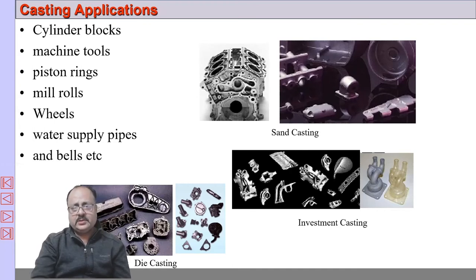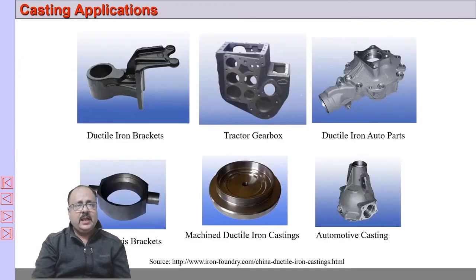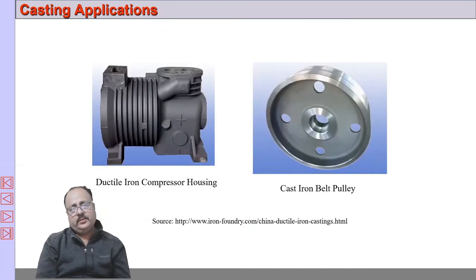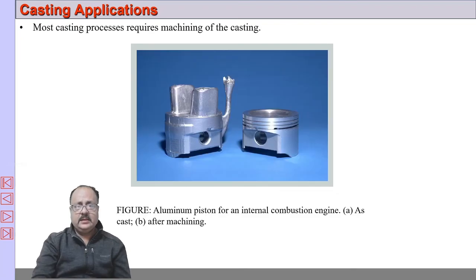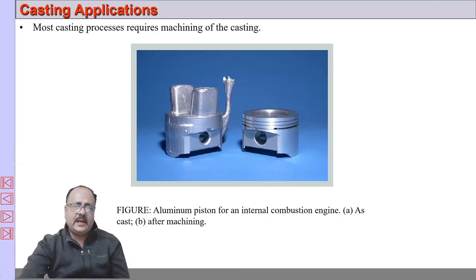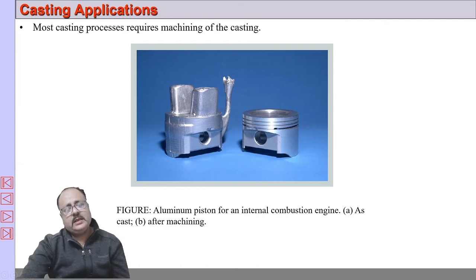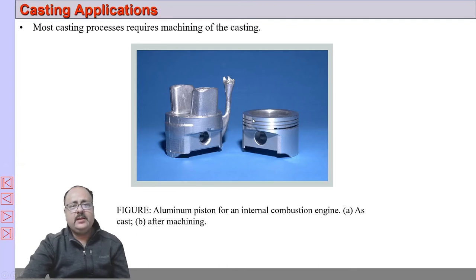These are some images of casting processes — sand casting, investment casting, die casting, and sand casting products. You can see a ductile iron compressor housing, a pulley on the right side, and a piston. The figure on the left side is the as-cast product, and this is the finished product. After casting, the risers and sprue are cut off by machining process. The piston ring grooves are made and the entire thing is finished by machining process. This is an aluminium casting.